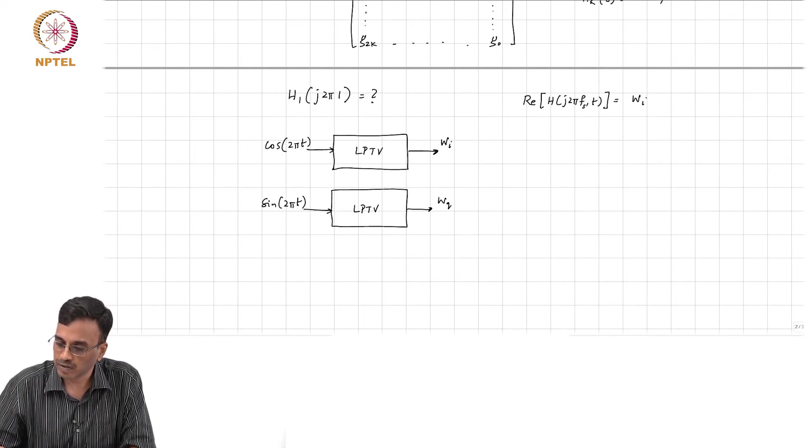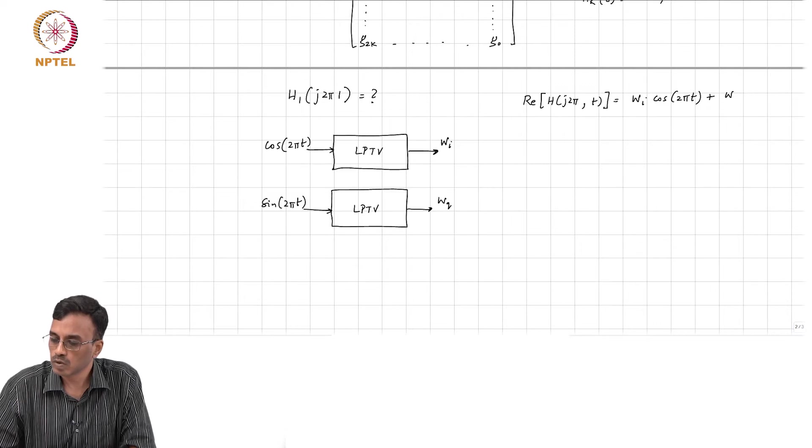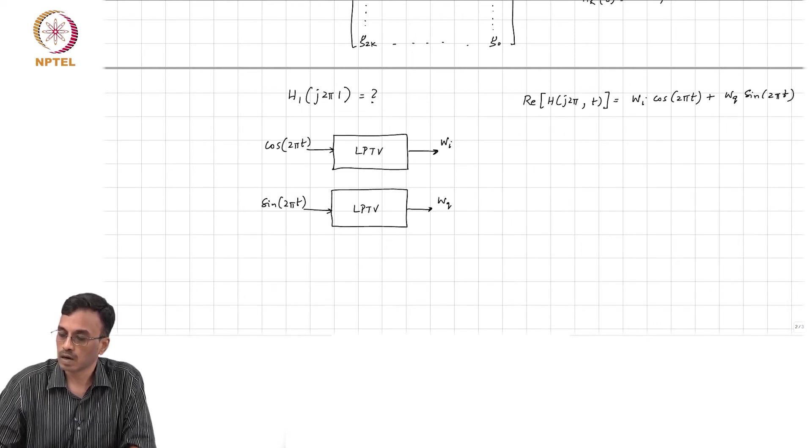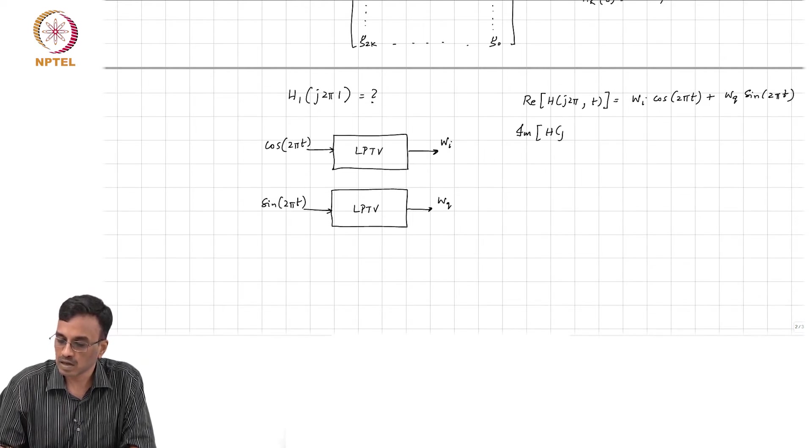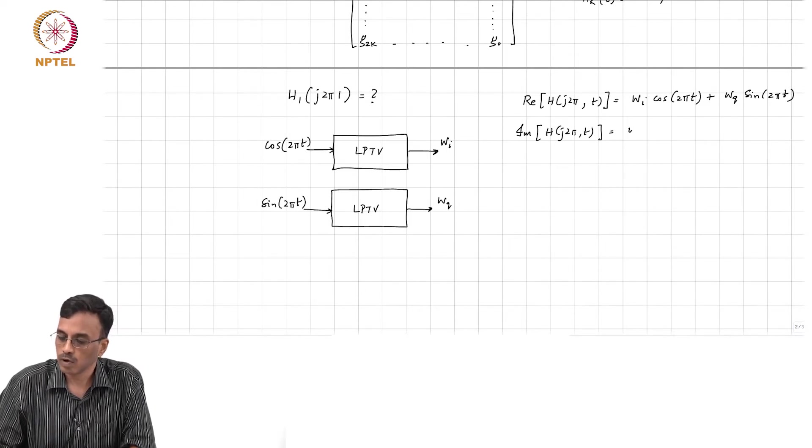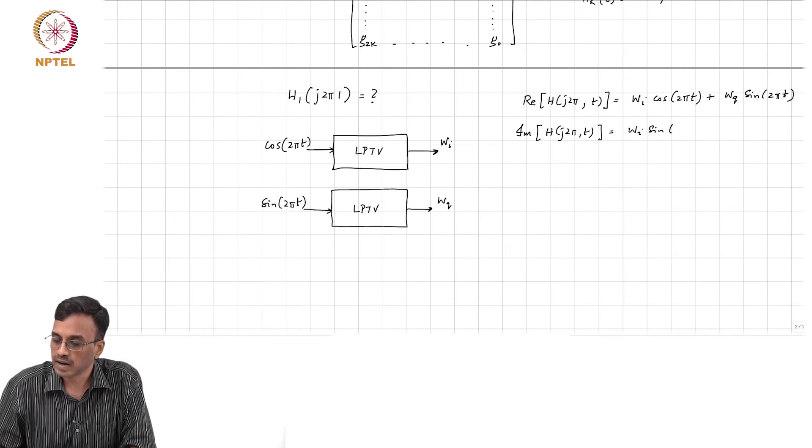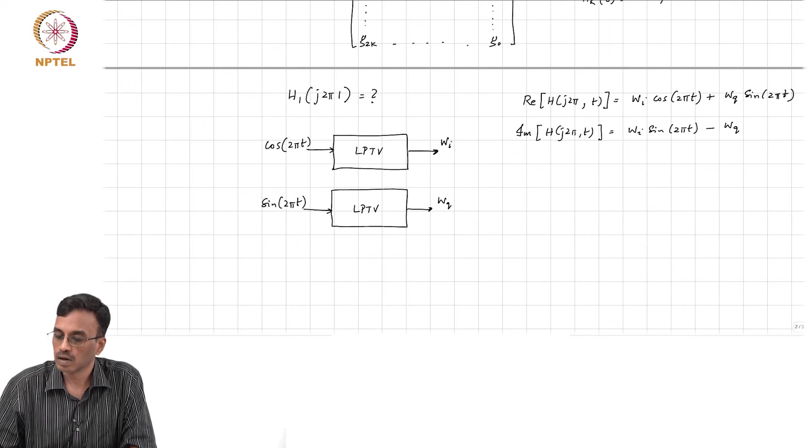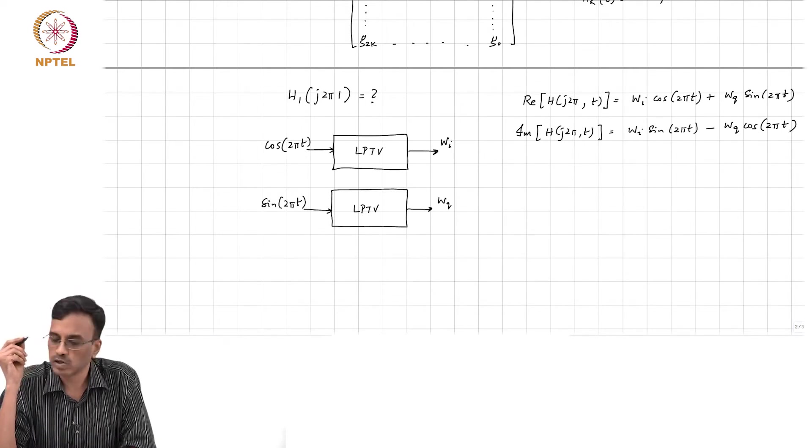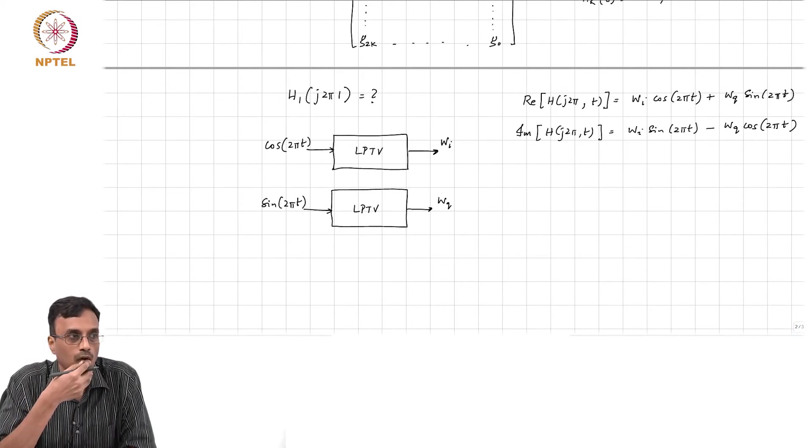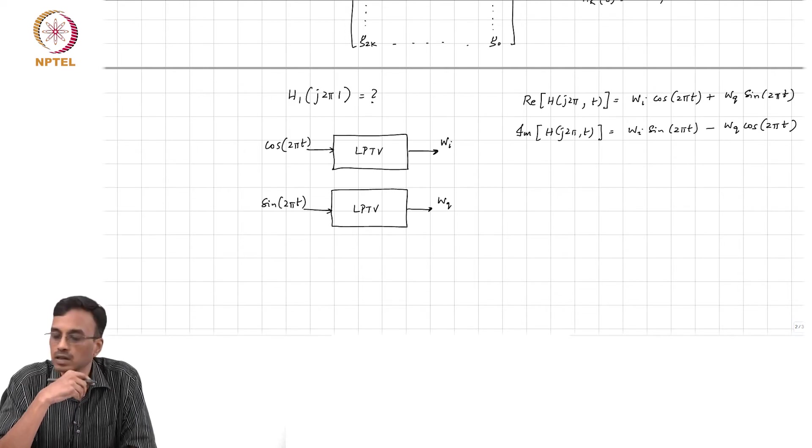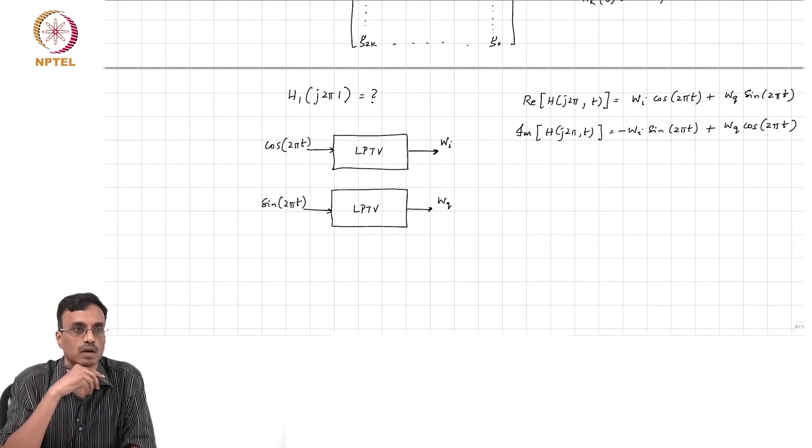So this is cos - wᵢ times fₛ is 1 - cos 2πt plus wq sin 2πt. And the imaginary part of H is wᵢ sin 2πt minus wq cos 2πt. I am sure this is correct. Look back at your notes - is it correct? Minus must be here and plus must be, alright.